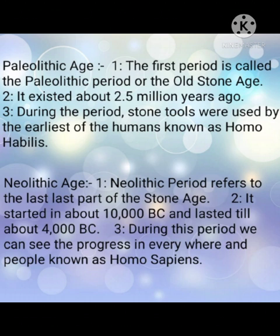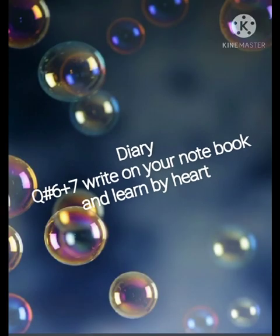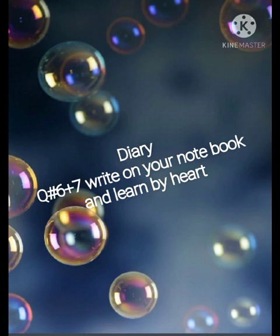Paleolithic age number three: during this period, stone tools were used by the earliest humans known as Homo habilis. Is period mein stone ke tools use kiye jate the. Neolithic age number three: during this period we can see progress everywhere, and people known as Homo sapiens — jo humari tarah ke insaan the. Students, do your diary, stay safe, and Allah Hafiz.